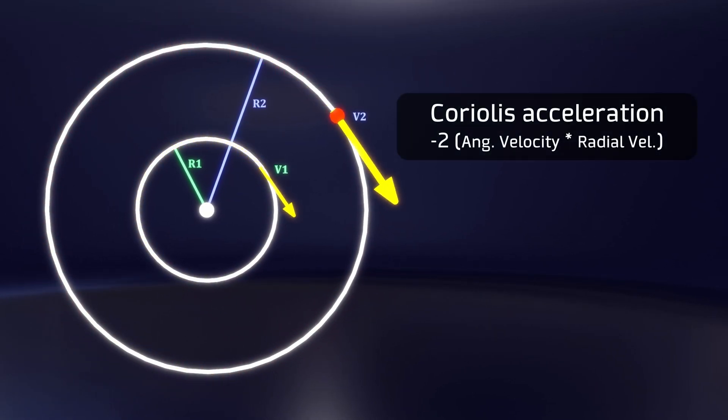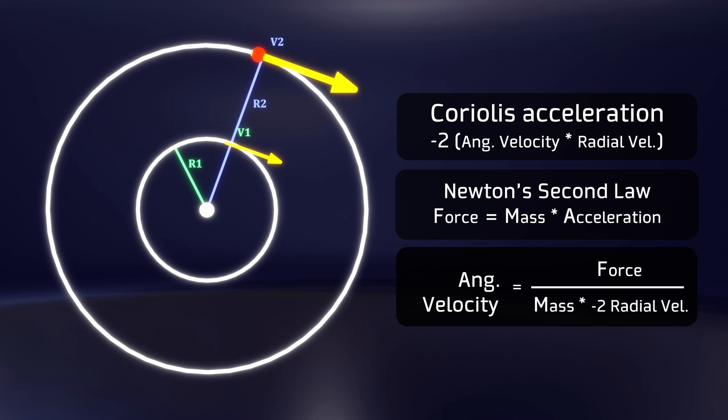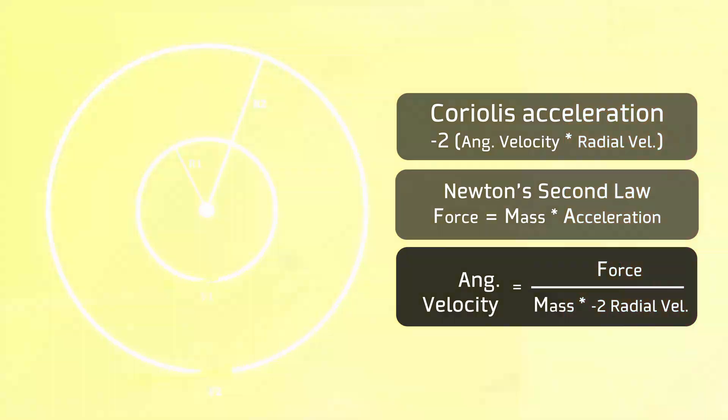This acceleration, by the way, can be calculated as minus 2 times the angular velocity of the particle, multiplied by the speed at which it moves radially, values that we can then replace in the classic formula of force equals mass times acceleration. Thus, if we have a system in which we know the value of the mass, the velocity perpendicular to the axis of rotation and the applied force, we can calculate its angular velocity.